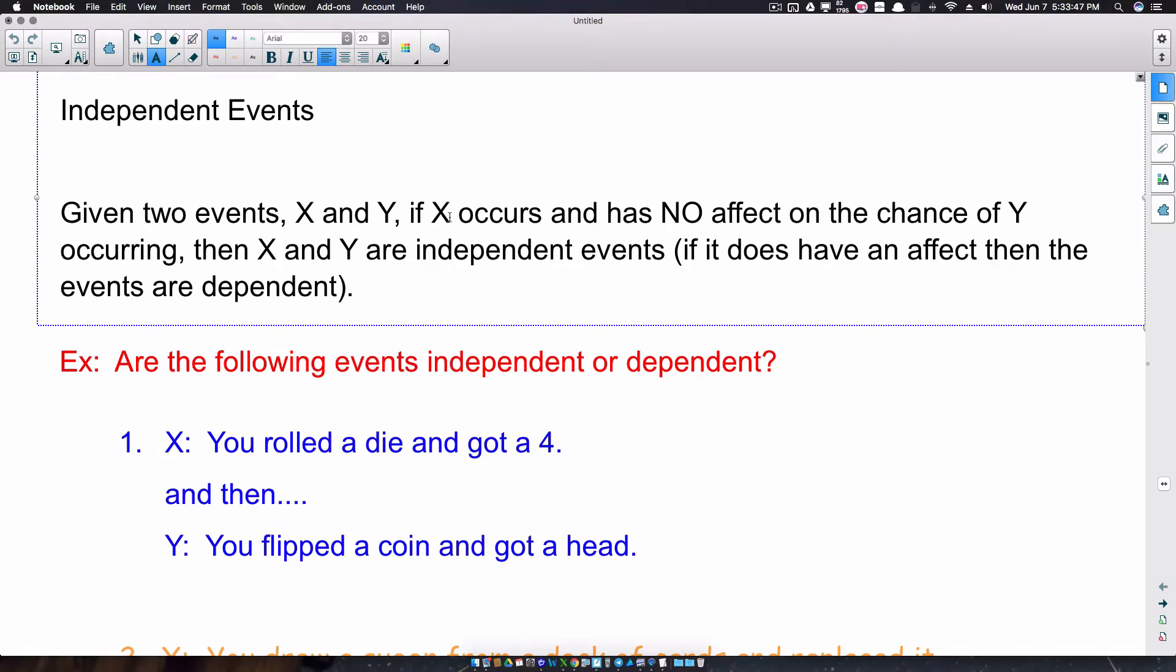Now, if X does occur and it does have an effect on Y occurring, then we call these events dependent. So basically, it's the opposite of independent. Now, read over that definition. I'm going to kind of reiterate it in these examples. And let's determine whether these events below are independent or dependent.